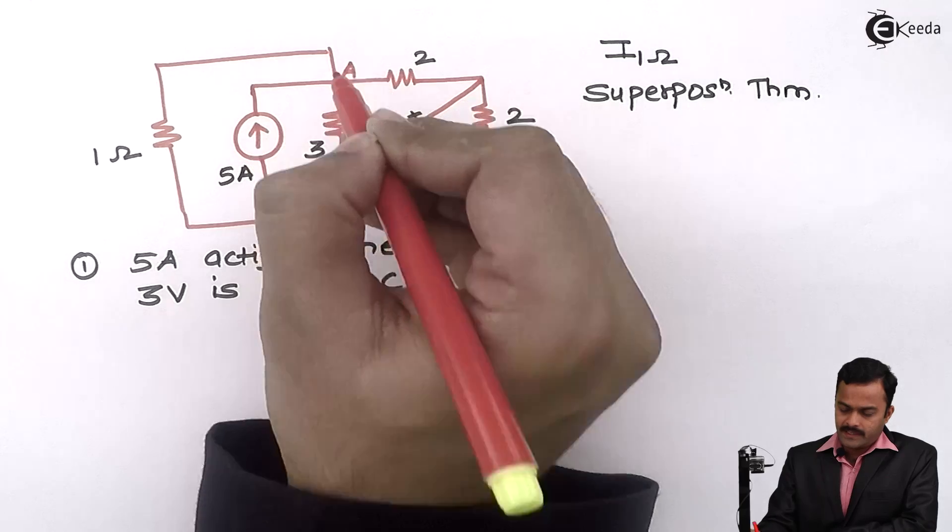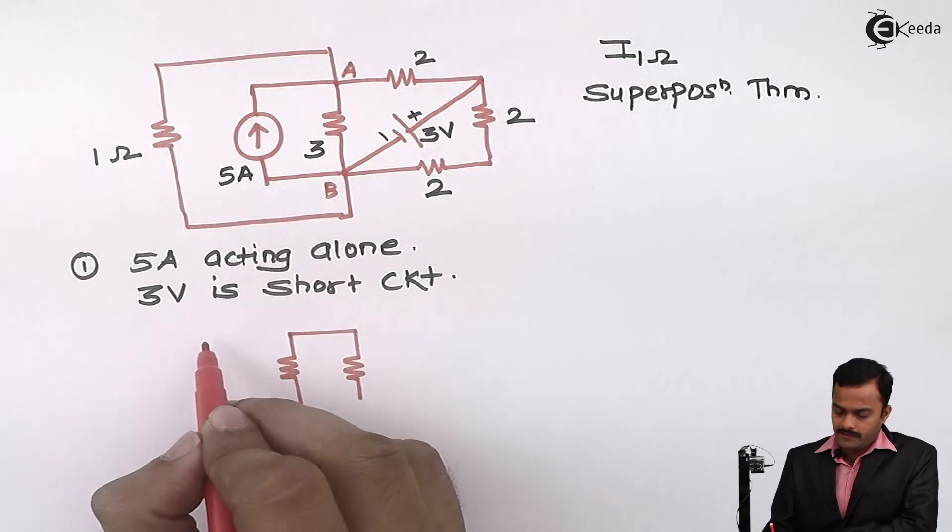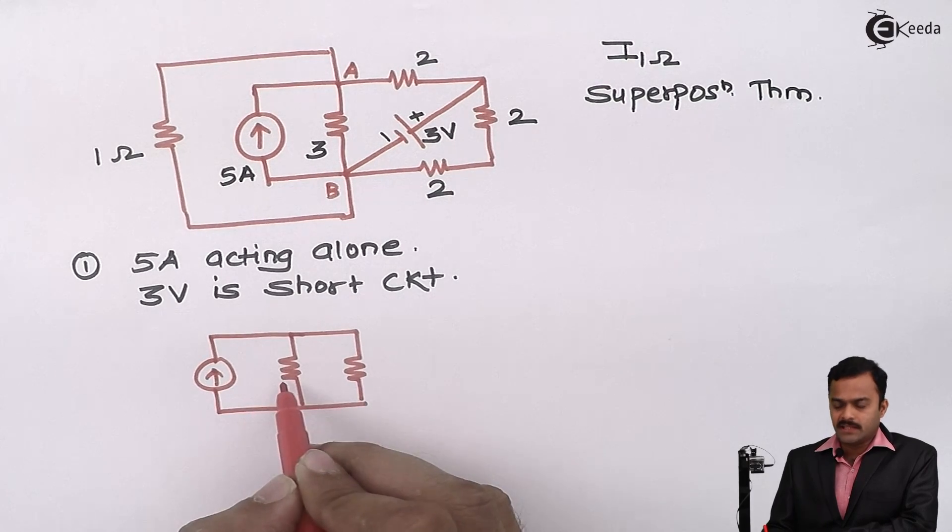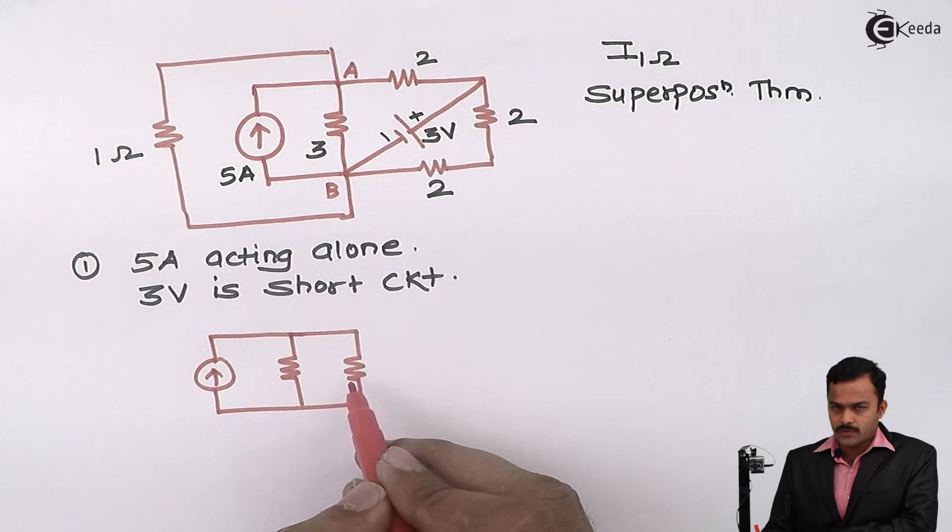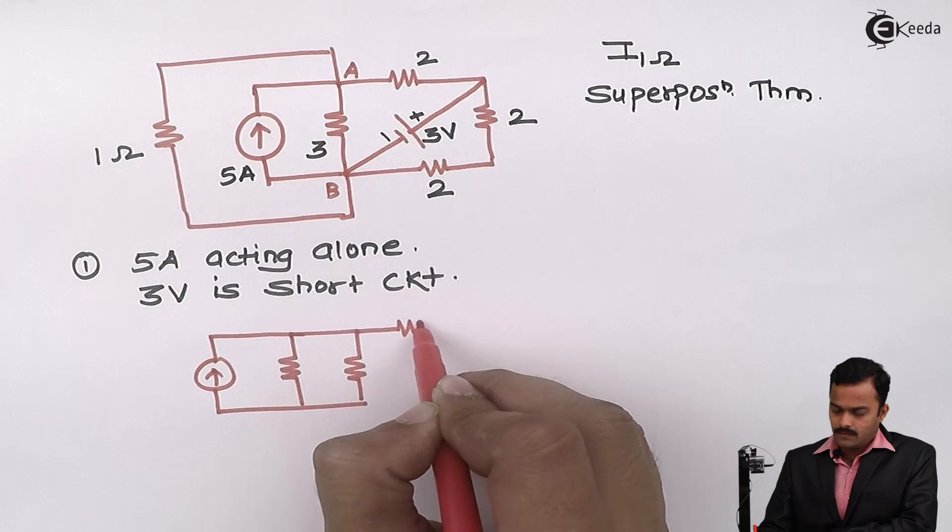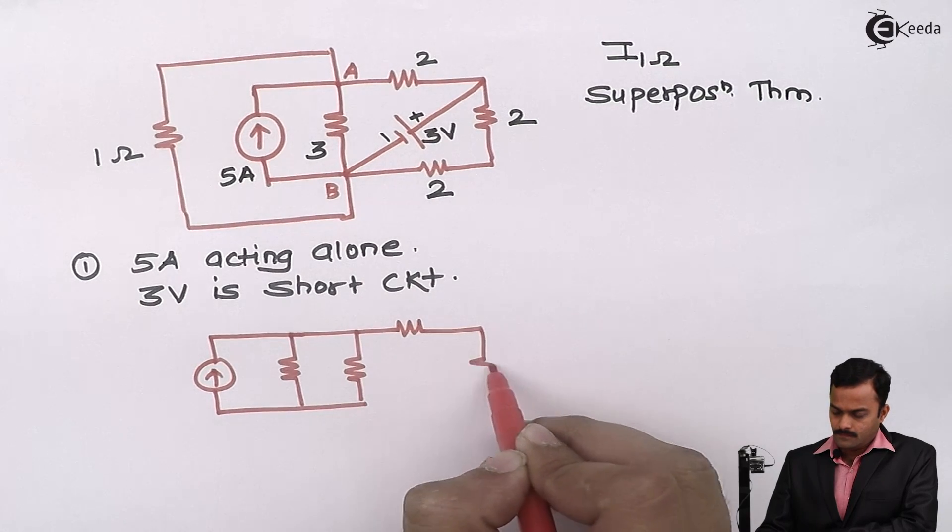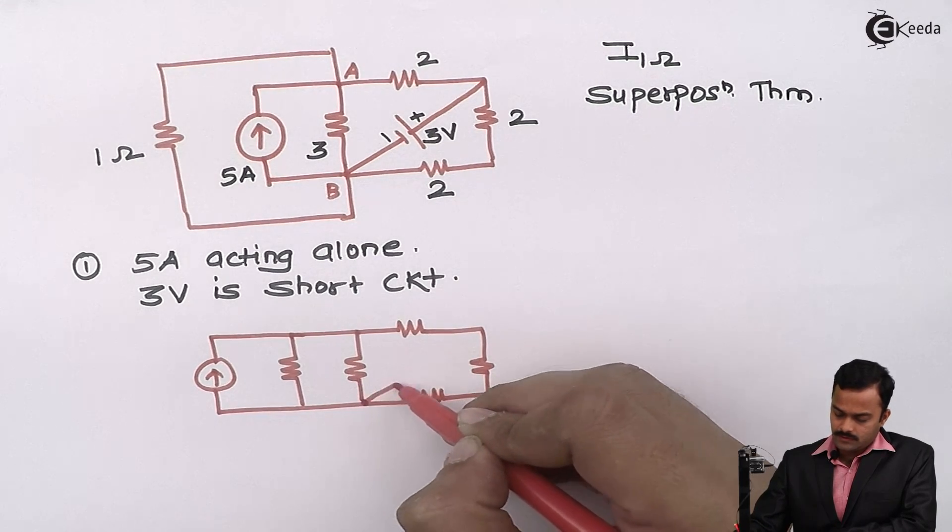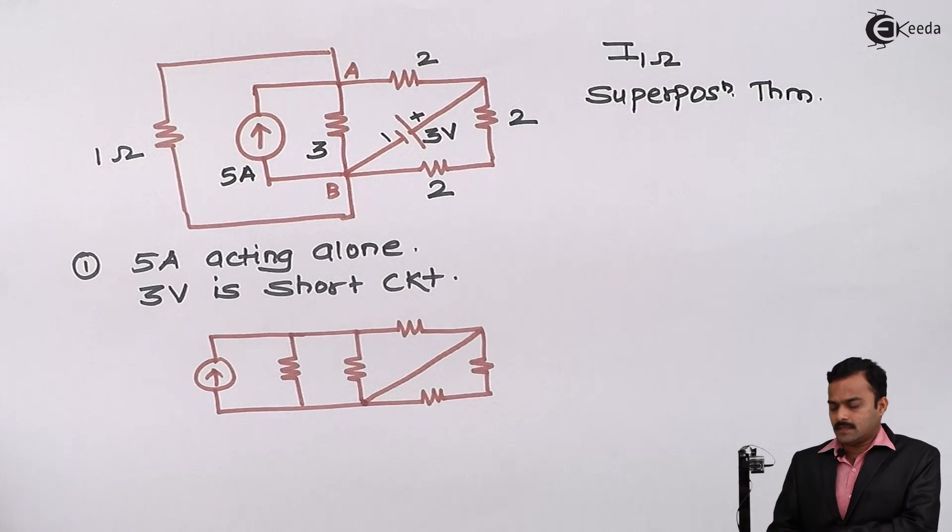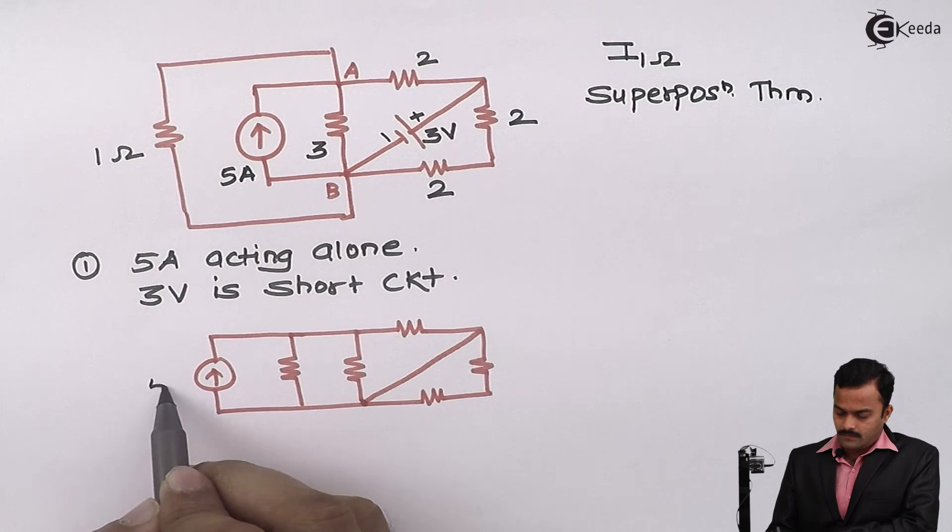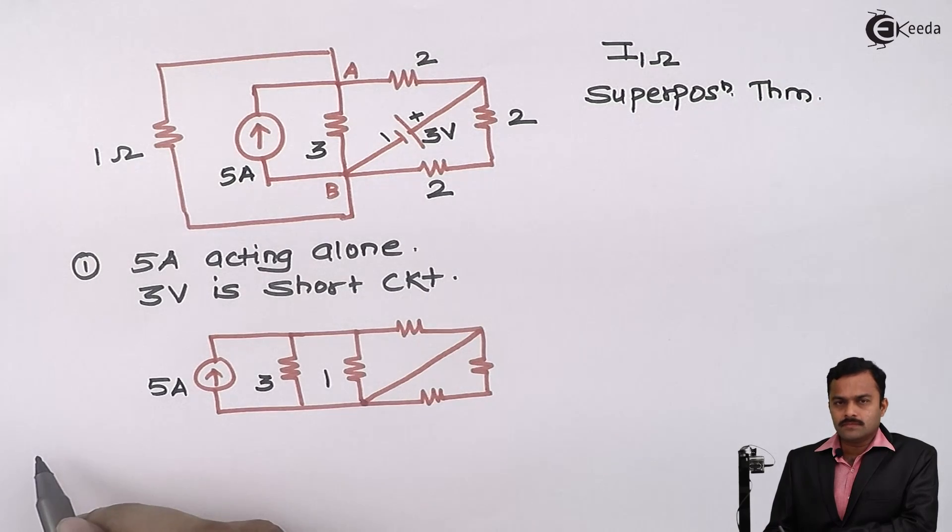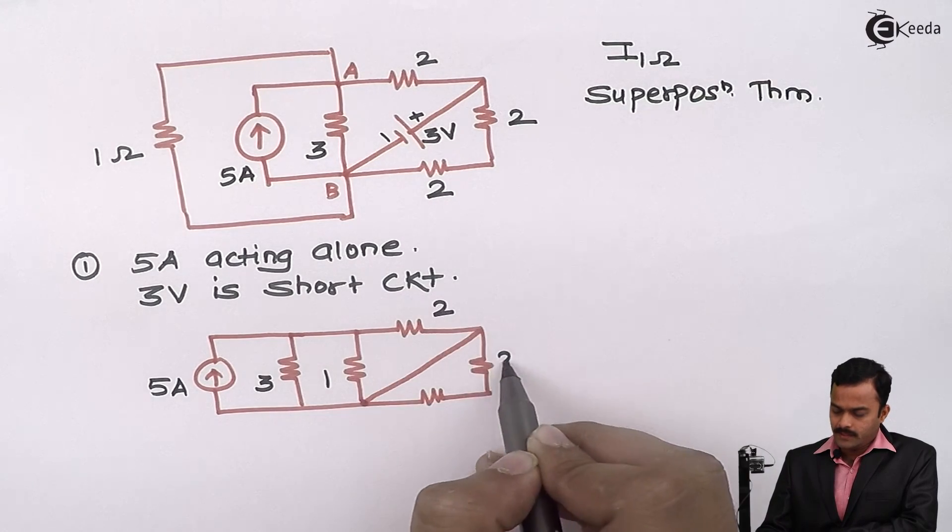Because, suppose this is point A and B. Between A and B, I am having a current source, which is acting alone, resistance 3 ohm, 1 ohm resistance through which we are supposed to find out a current. This is 2 ohm, 2 ohm in series with this 2 ohm and 3 volt will be shorted.